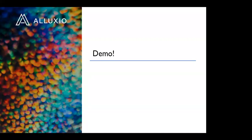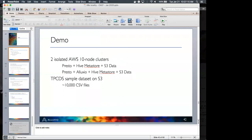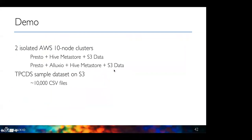Now I'll do a short demo of the new Alluxio features. The setup has two clusters on the same infrastructure. One has Presto, Hive Metastore, and S3 data with Alluxio; the other has the same setup but without Alluxio. The dataset is a TPC dataset on S3, and some tables — like store sales — have 10,000 CSV files, which is very inefficient and not compute-optimized. I'll show how transformations can optimize that data.